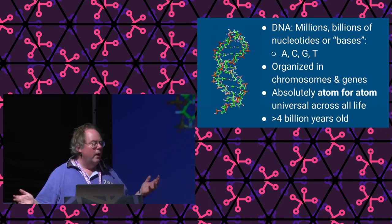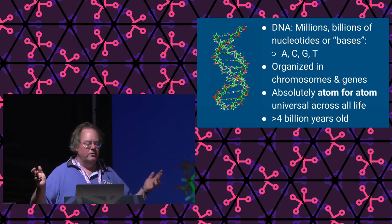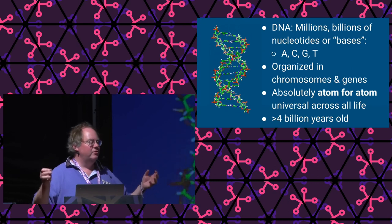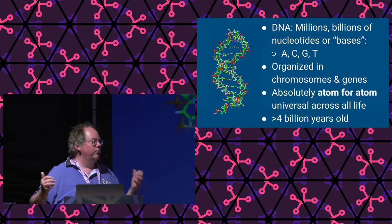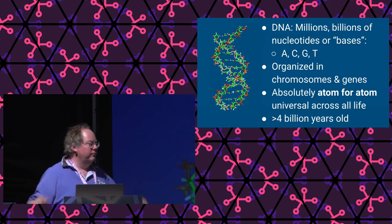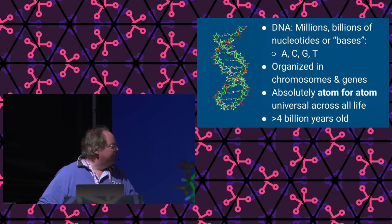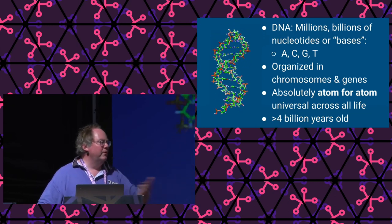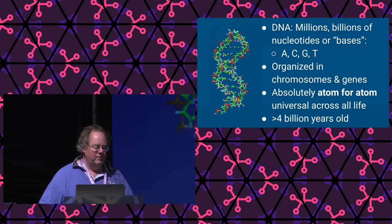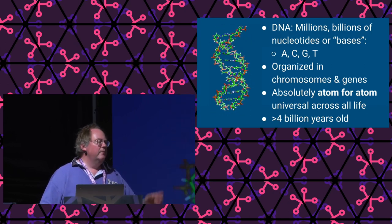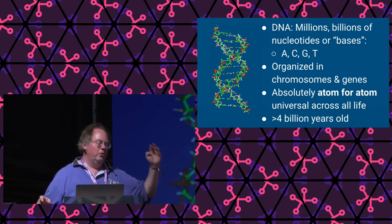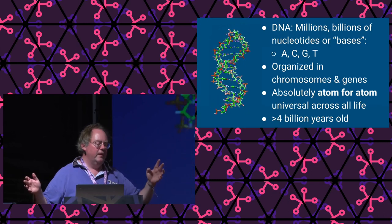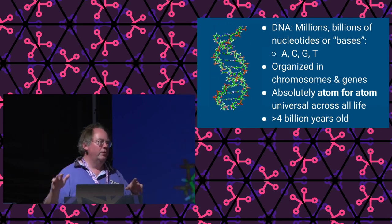So, DNA. Millions or billions of nucleotides, or bases. We all contain around 3.3 billion bases of DNA — that's what we always thought. Later we found out that some people have about 6% more DNA than others; there's a lot more variation between us than we thought. And while our binary stuff is 0 and 1, in DNA we have four molecules called A, C, G, and T, organized in chromosomes and genes.